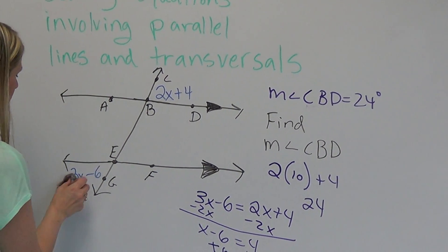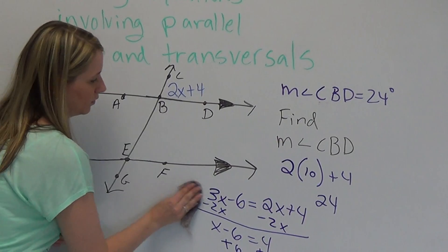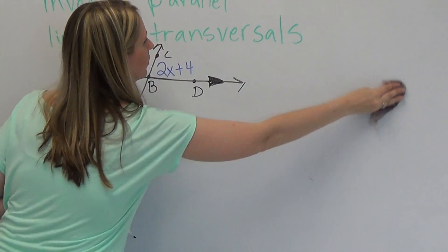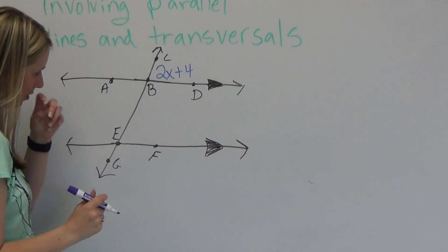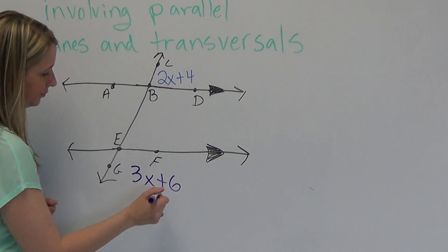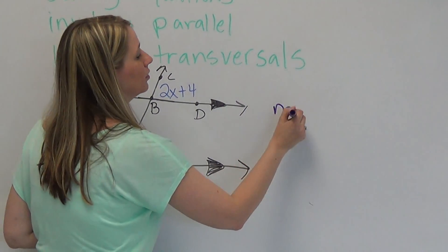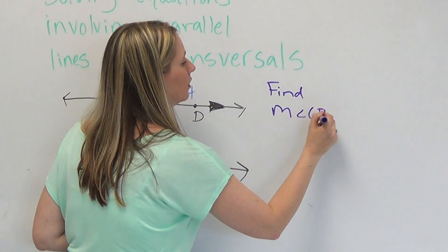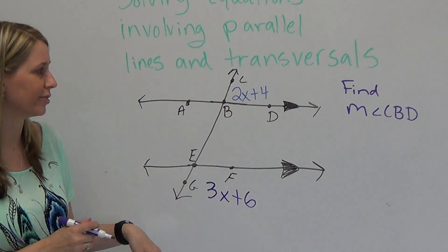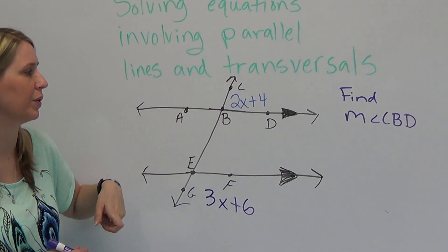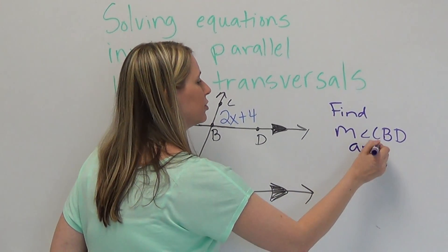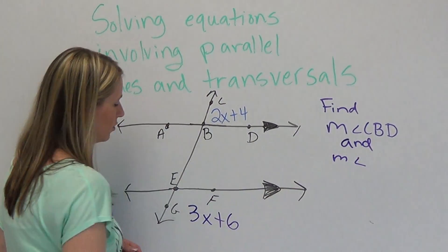Let's do one more problem. I'm going to change this up just a little bit. We're still going to find the measure of angle CBD one more time. But as you can see, I moved my expression over here, so it's a little bit different, and the expression is different as well. Again, CBD is represented by 2x plus 4. Now, GEF is represented by 3x plus 6. Let's actually find both angles. So we'll find the measure of angle CBD and the measure of angle GEF.